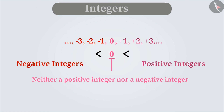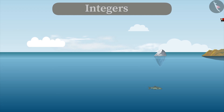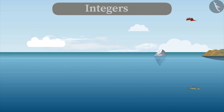Therefore, 0 cannot be represented by any sign. Now, let's understand why integers are important with the help of an example. Suppose a bird is flying at a height of 500 metres above sea level and a fish is at a depth of 500 metres below sea level.